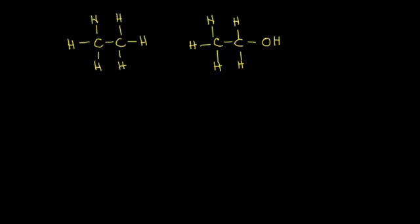Let's start with physical properties of alcohols. We're going to compare alcohols to alkanes. This alkane on the left has two carbons, so this is ethane. On the right, if we take off one of those hydrogens and replace it with an OH, we have ethanol right here.